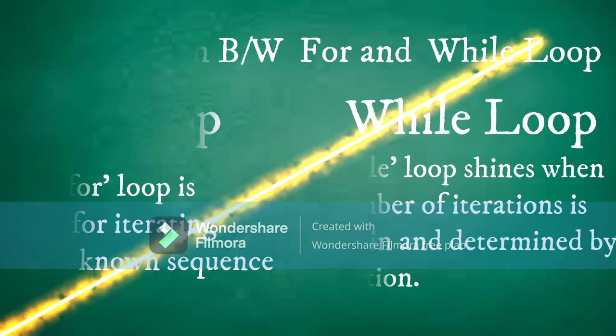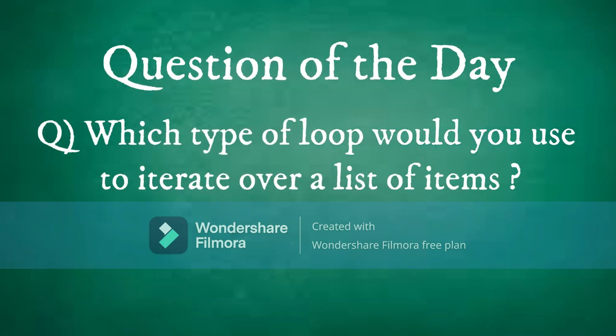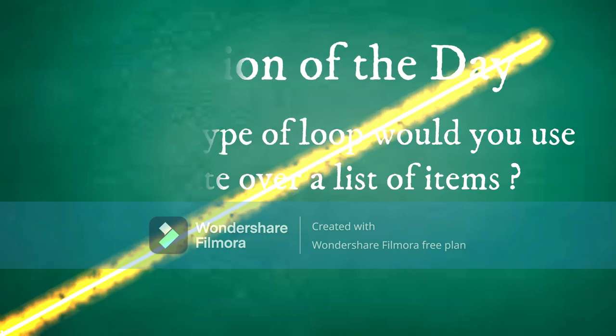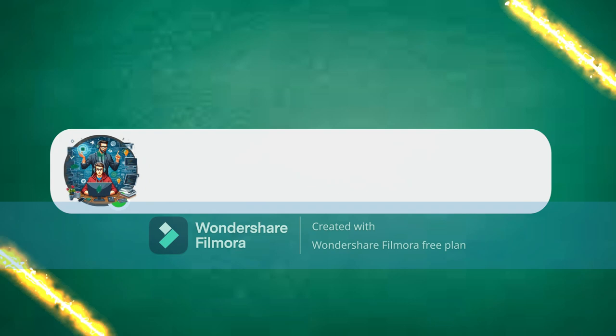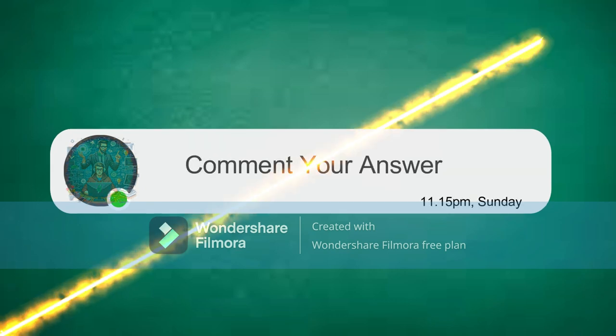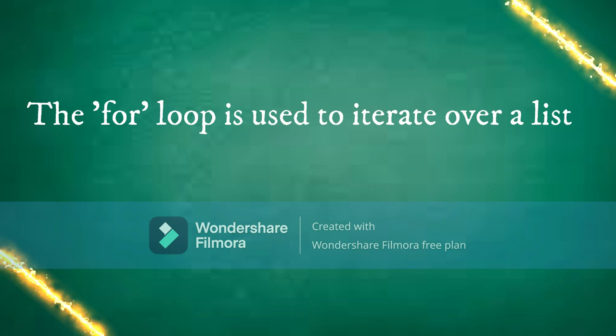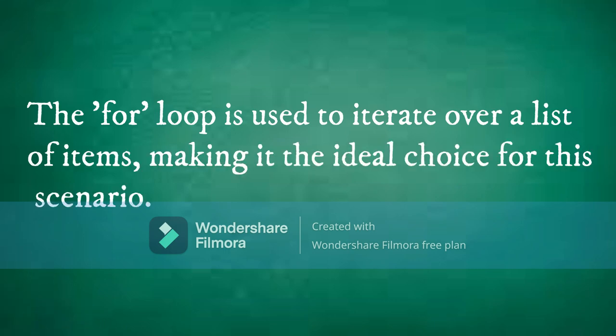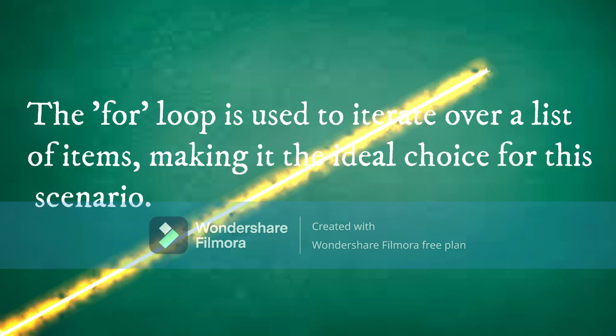Now let's see our question of the day: which type of loop would you use to iterate over a list of items? Share your answers in the comments below. As we approach the end of our lecture, it's time for the solution: the for loop is used to iterate over a list of items, making it the ideal choice for this scenario. Thank you to everyone who participated.